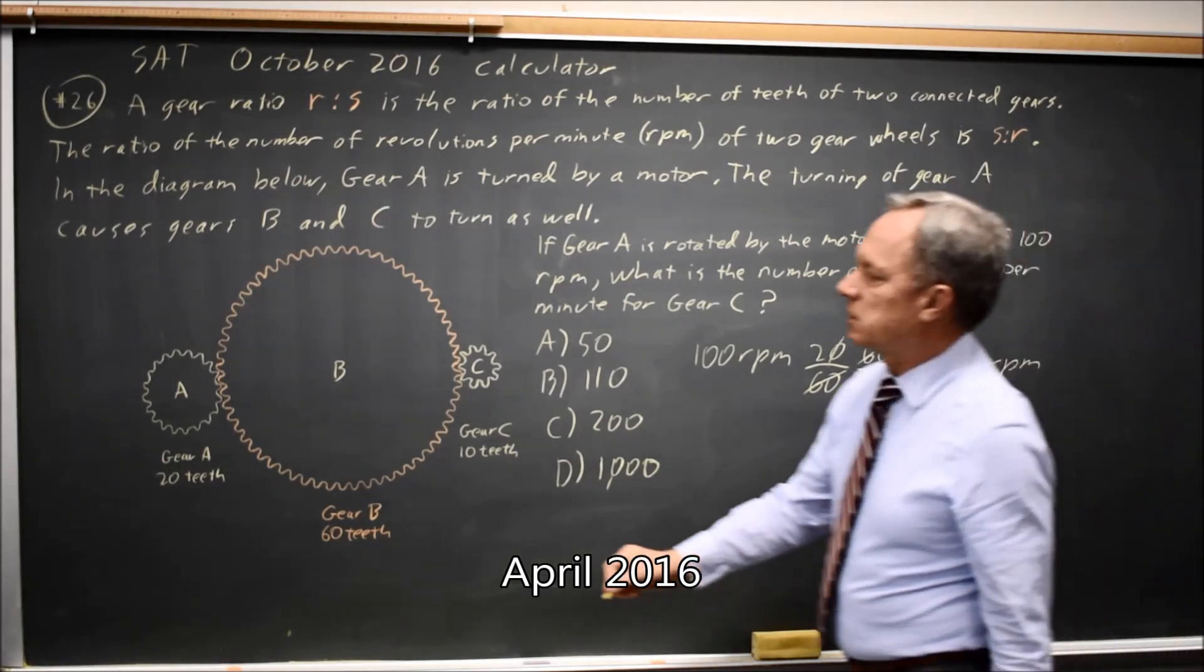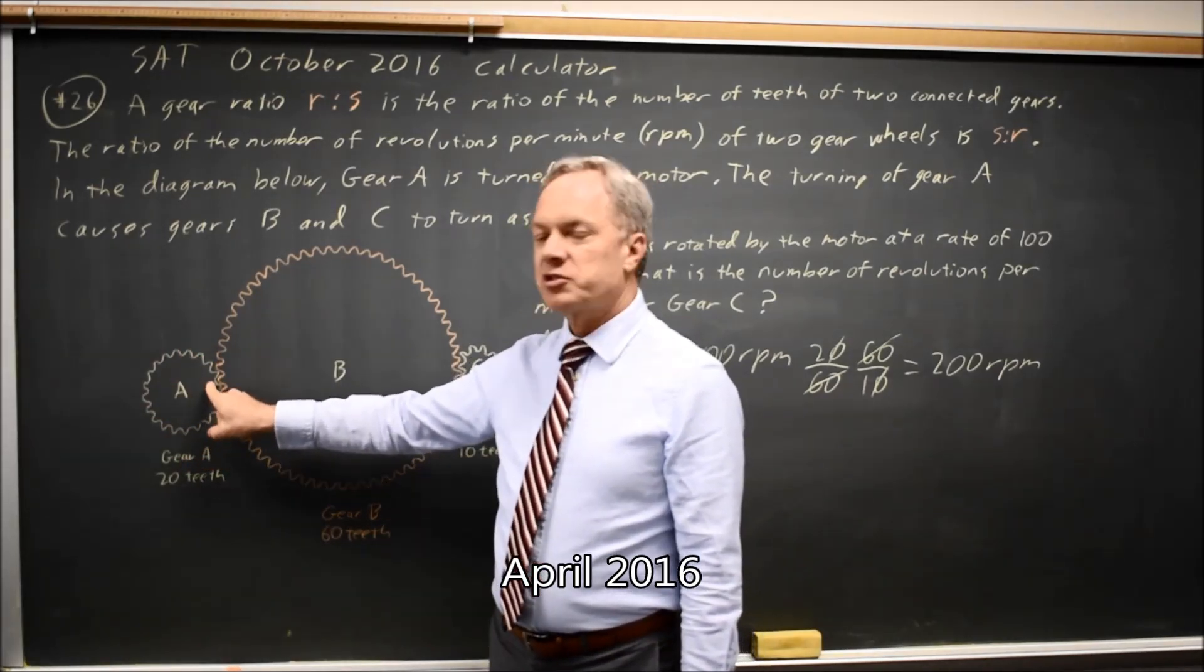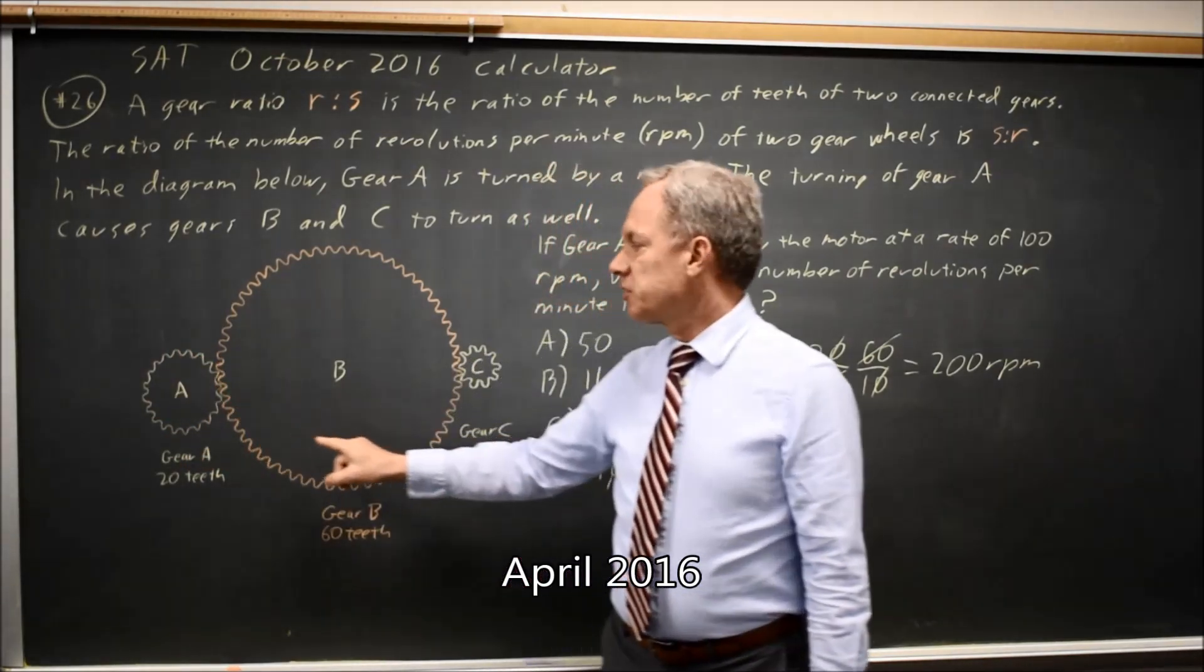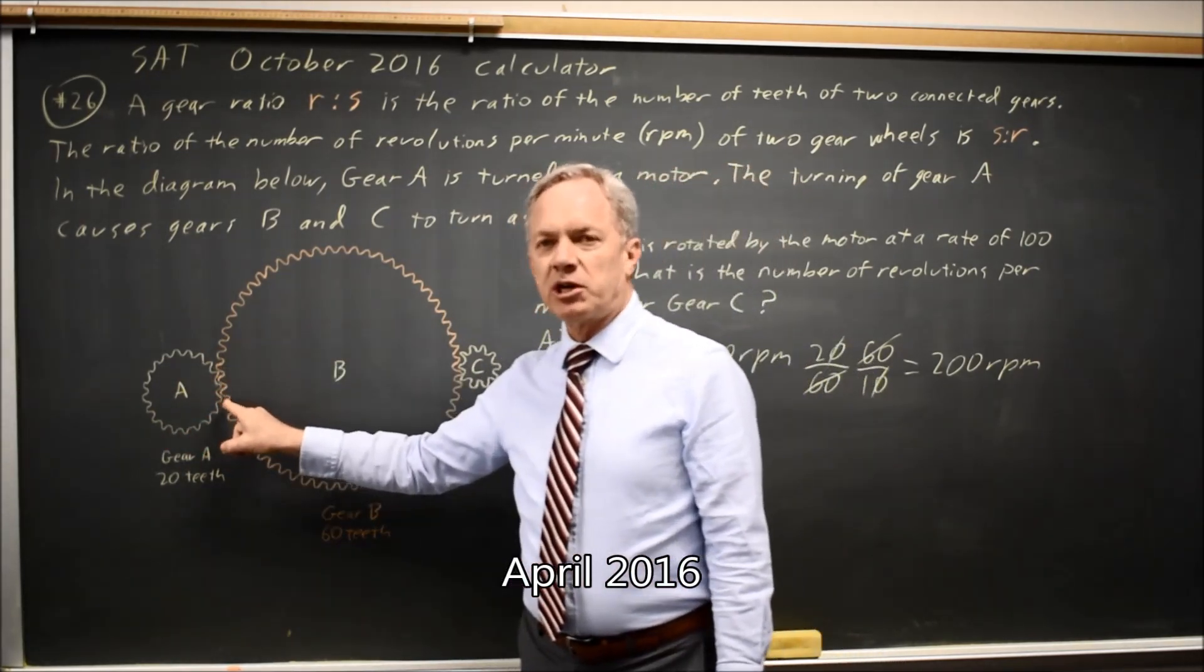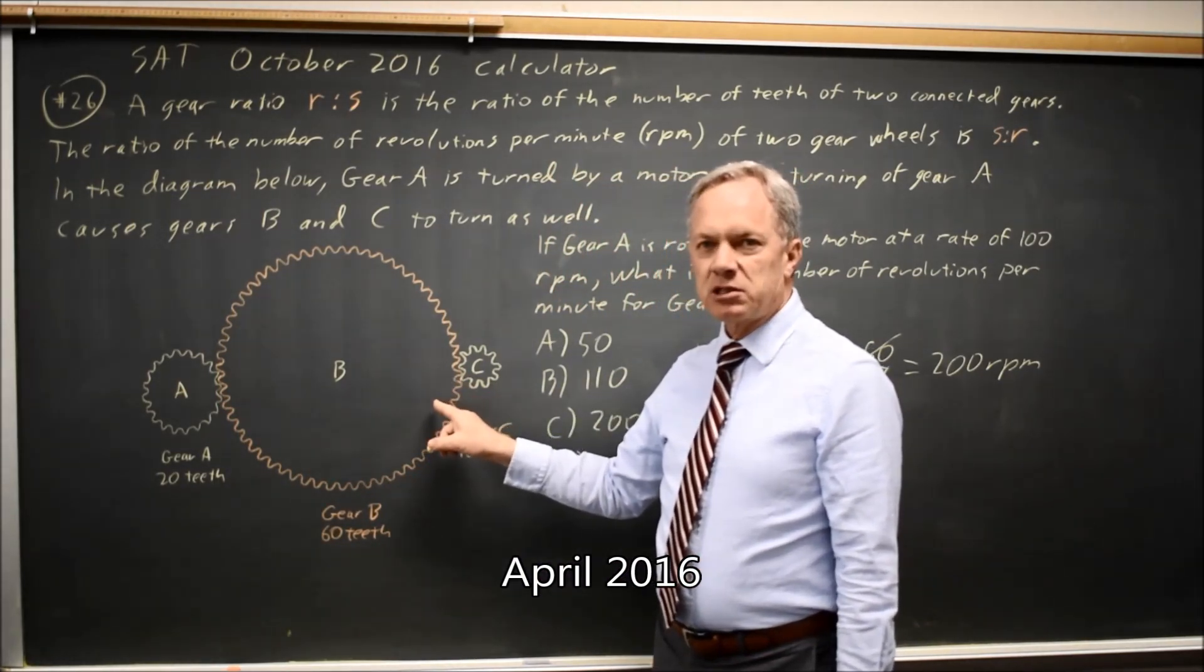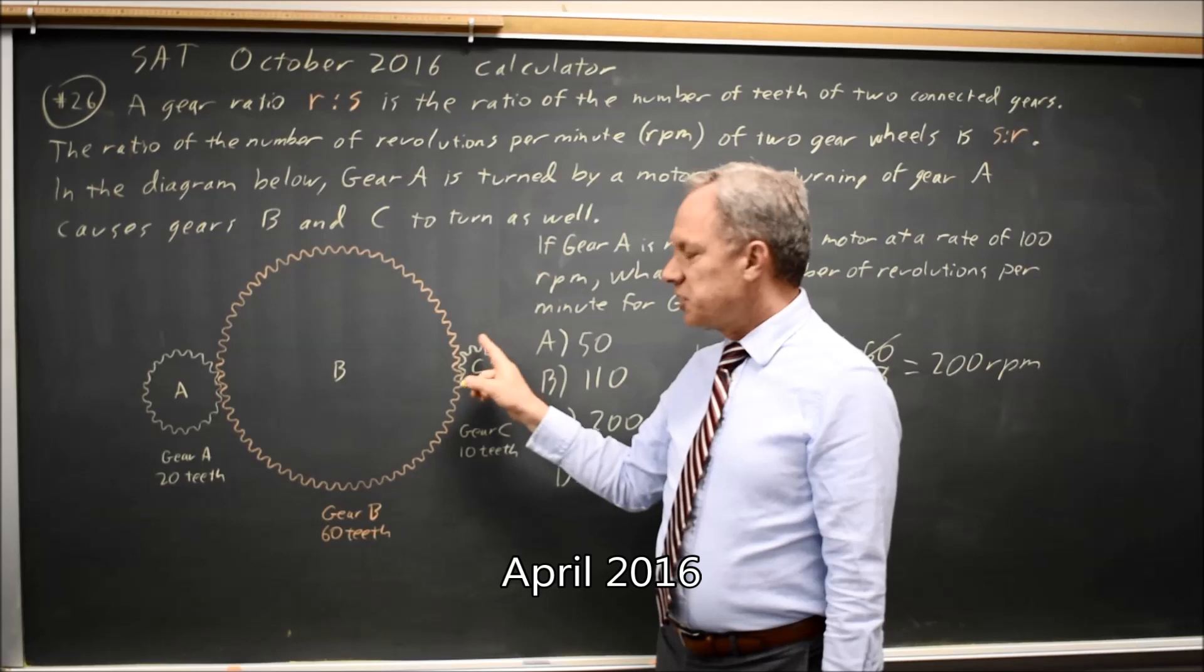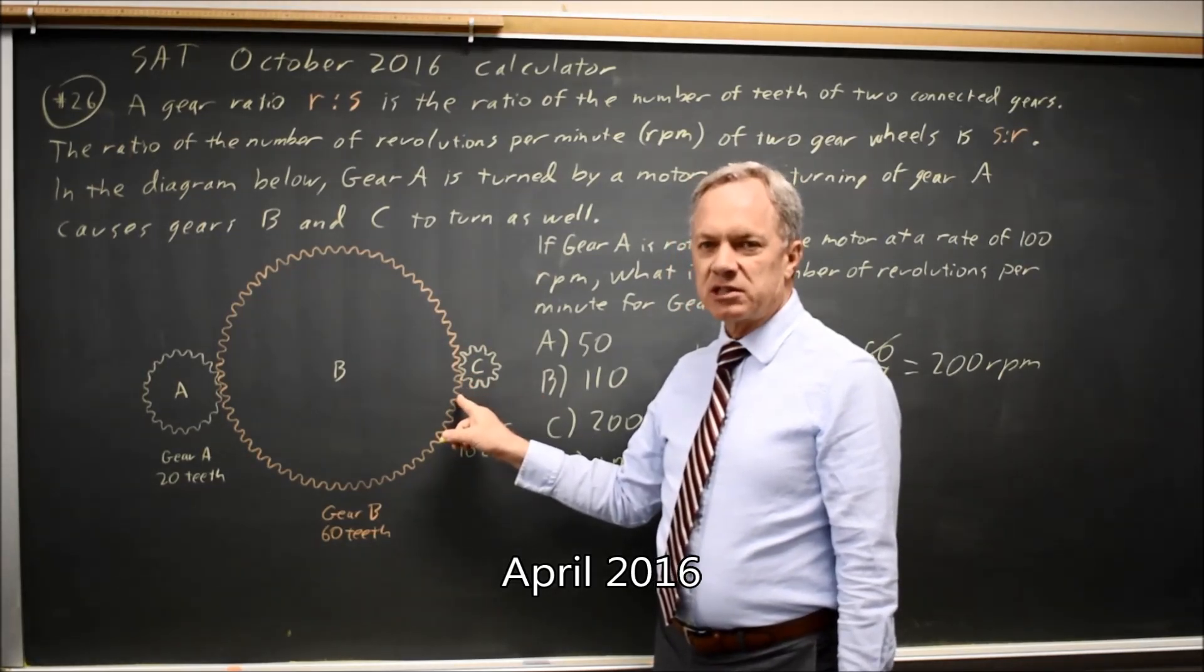Which makes sense. If gear A has 20 teeth, each time one tooth moves on A, one tooth also moves on B, and one tooth moves on C. So in a full revolution, when 20 teeth go by on gear A, 20 teeth will go by on gear B, which is one-third of a revolution, and 20 teeth will go by on gear C, which is two revolutions of gear C.